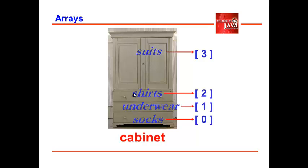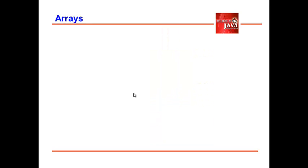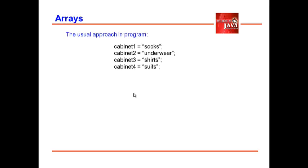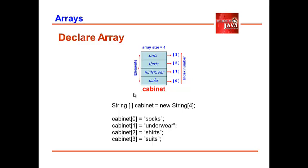As we convert this into a Java program, we declare four string variables to identify the content of each cabinet layer. Instead of declaring four different variables — cabinet1, cabinet2 — we use just one identifier variable, cabinet. We use square brackets on the data type to tell the compiler that we are allocating an array identifier. We instantiate it with the new operator, declaring the data type with its array size. Thus, String cabinet equals new String[4] declares cabinet as an array variable with string data type and a size of 4.